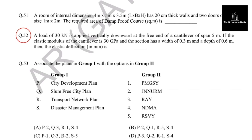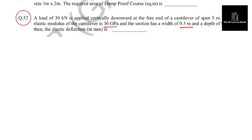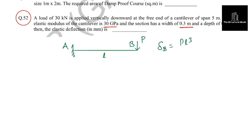The next question: a load of 30 kN is applied vertically downward at the free end of a cantilever of span 5 meters. Elastic modulus is 30 GPa and the section is 0.3 m by 0.6 m. Find the elastic deflection in mm. For a cantilever subjected to a point load P at the free end, the deflection at the free end is PL³ divided by 3EI.